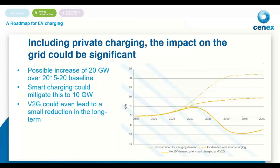Including private charging, the impact on the grid could be significant. This graph from the National Grid Future Energy Scenarios 2021 shows that with unconstrained EV charging, there's a possible increase in peak demand of over 20 gigawatts compared to the 2015–2020 baseline. This can be controlled through smart charging — controlling the time and power of charging — which reduces the increase to around 10 gigawatts. We can go further with bi-directional vehicle-to-grid (V2G) charging. V2G started in Japan as a response to the Fukushima nuclear disaster; it allows stationary plugged-in EV batteries to act as energy storage assets, charging and discharging in response to demands on the grid.